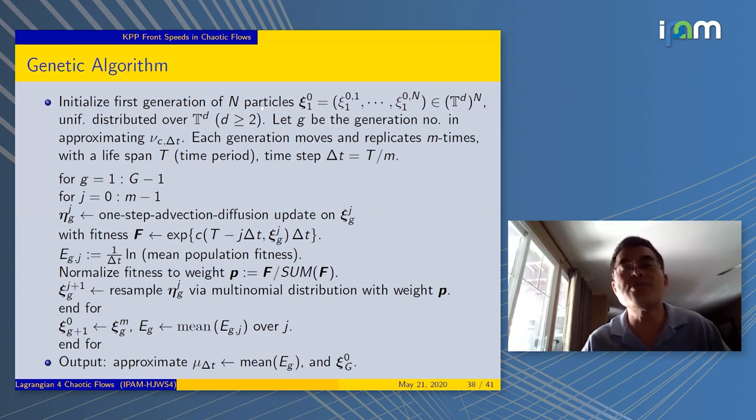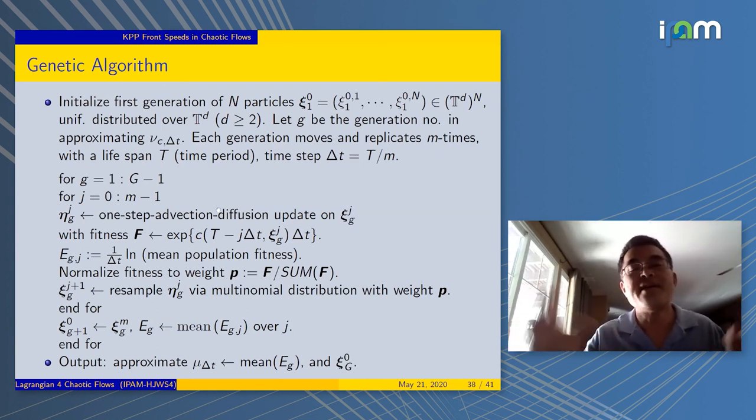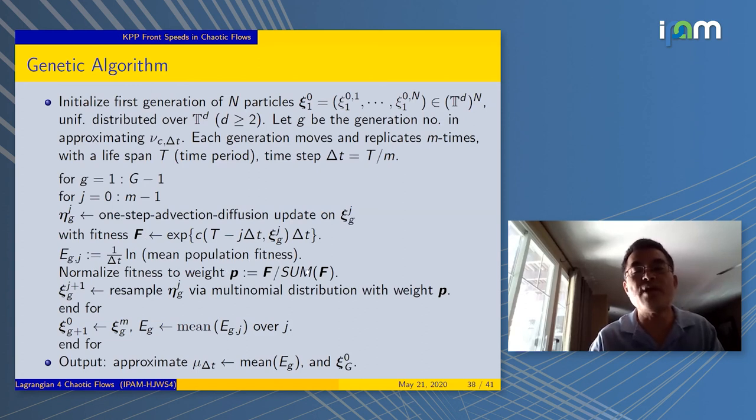Here's the algorithm. You're trying to approximate the invariant measure as t goes to infinity. You start with the first generation of n particles, uniformly distributed on the torus. We're going to evolve them in the following way. First, each particle would go by advection diffusion. You move around, let them randomly move around a little bit. You also calculate the fitness of each particle using exactly the potential part of the operator. This exponential part gave you the fitness.